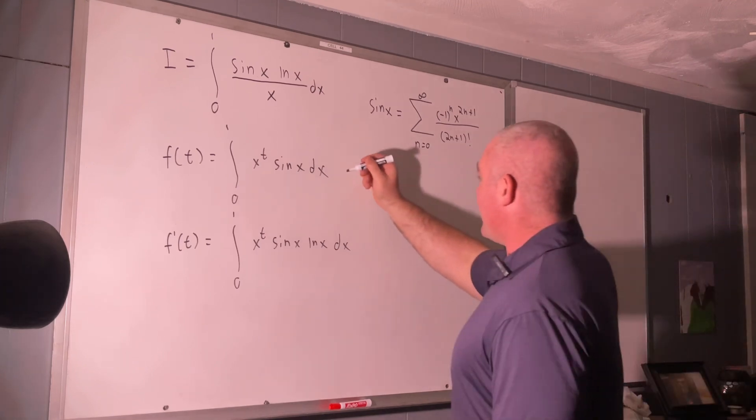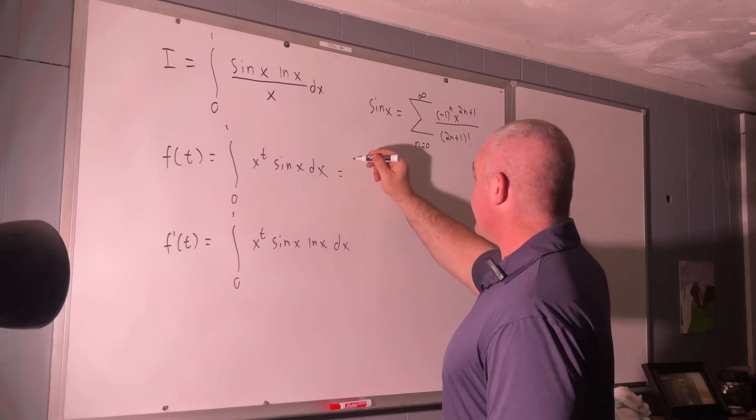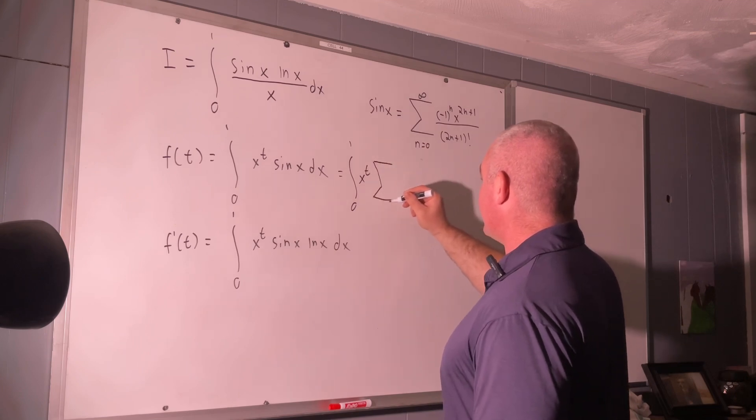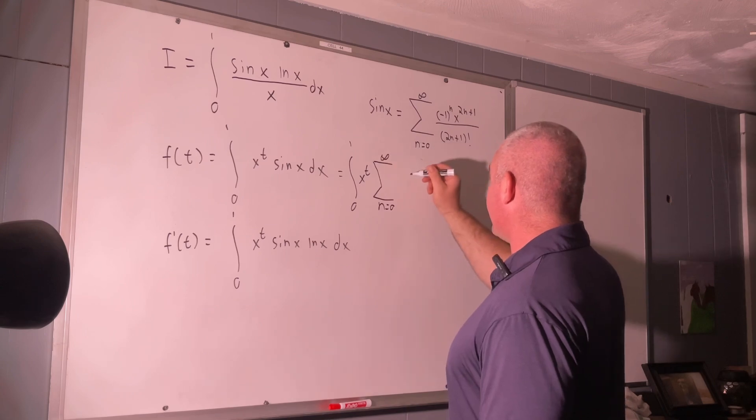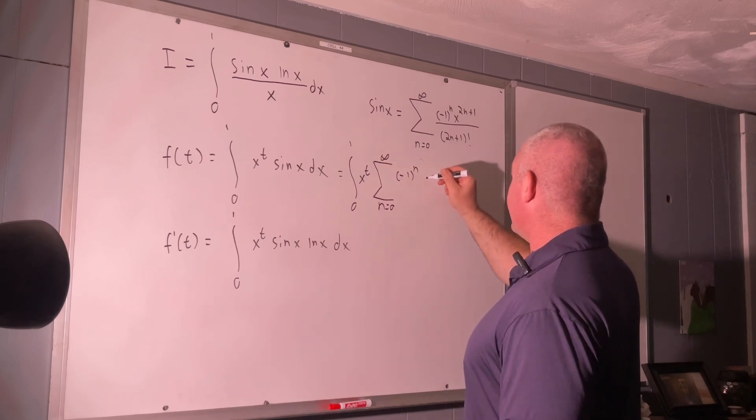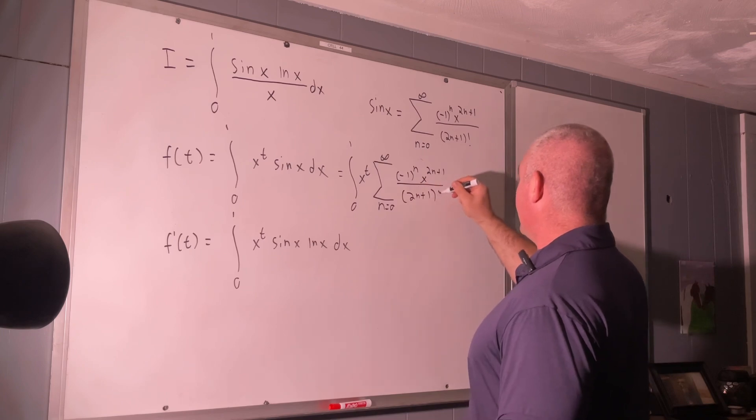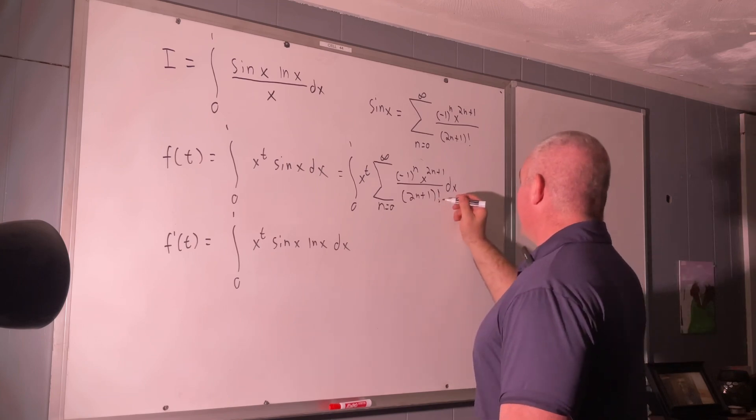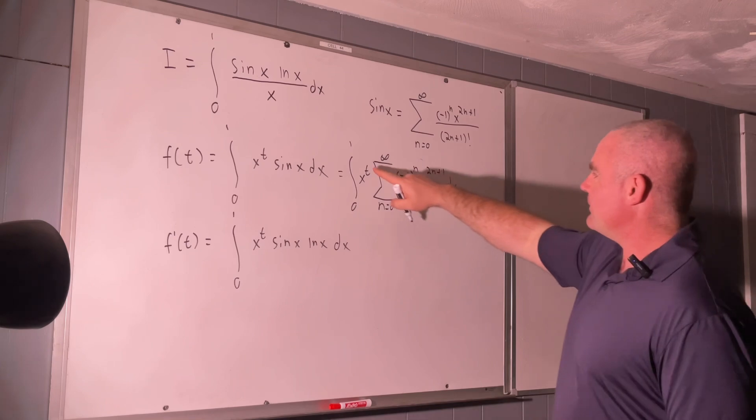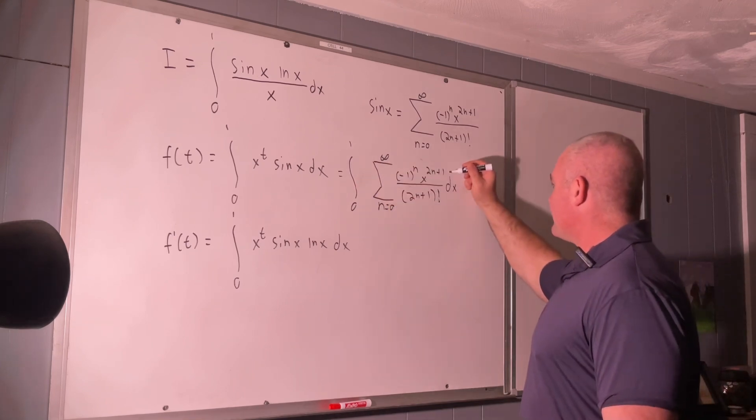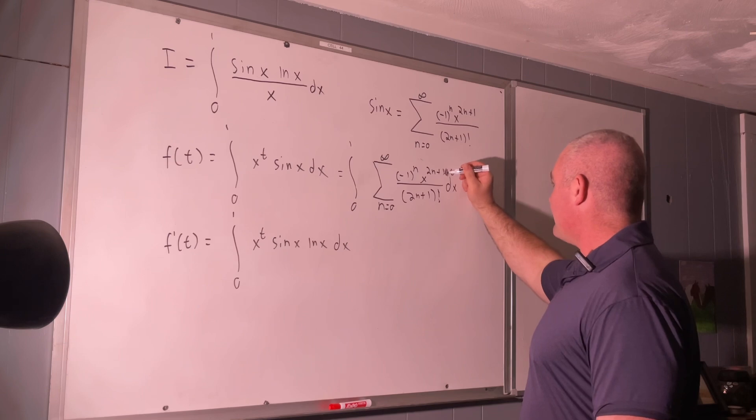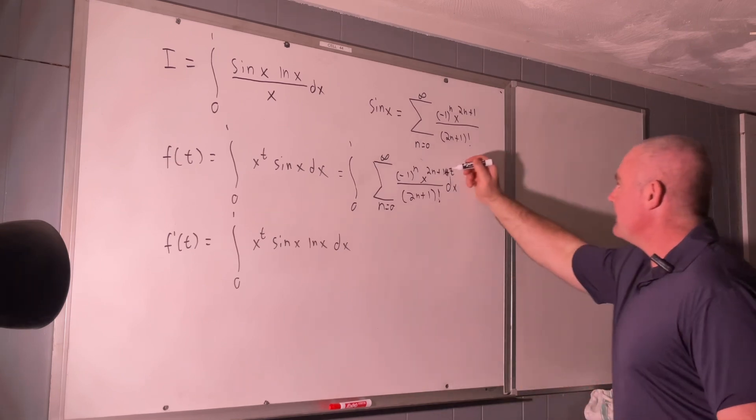That's going to give us f of t is equal to the integral from 0 to 1 of x to the t times the sum, as n goes from 0 to infinity of negative 1 to the n times x to the 2n plus 1 over 2n plus 1 factorial dx. And from there, what we'll do is bring that x to the t inside our sum as a plus t. Make that x to the 2n plus 1 plus t.